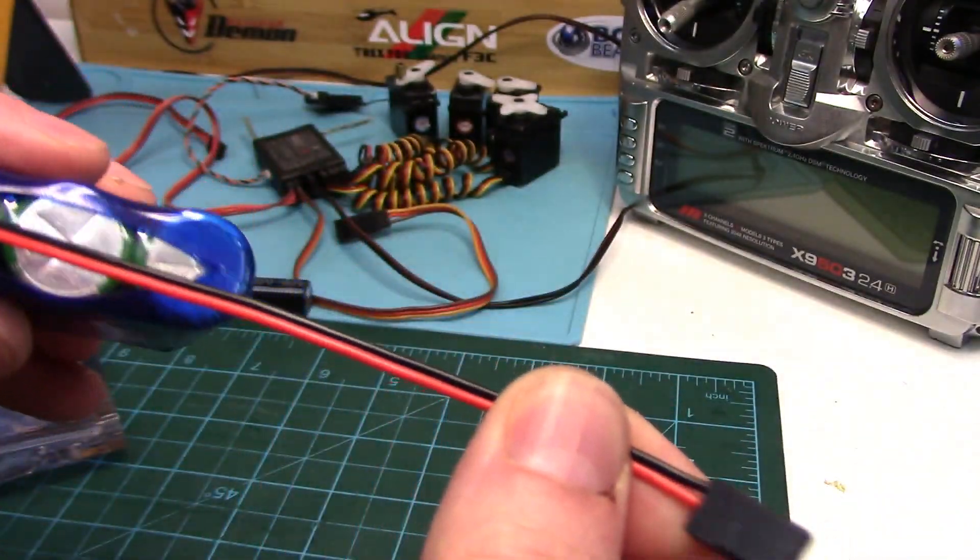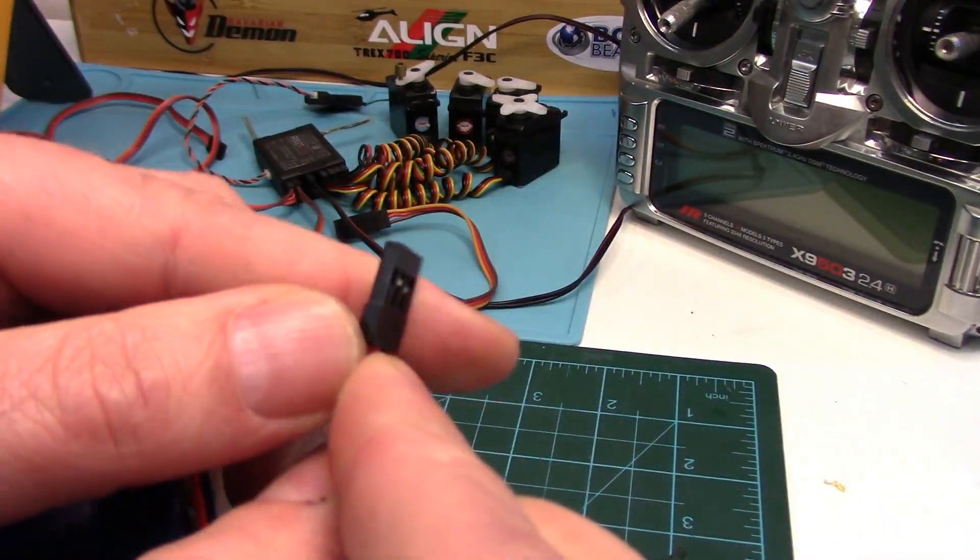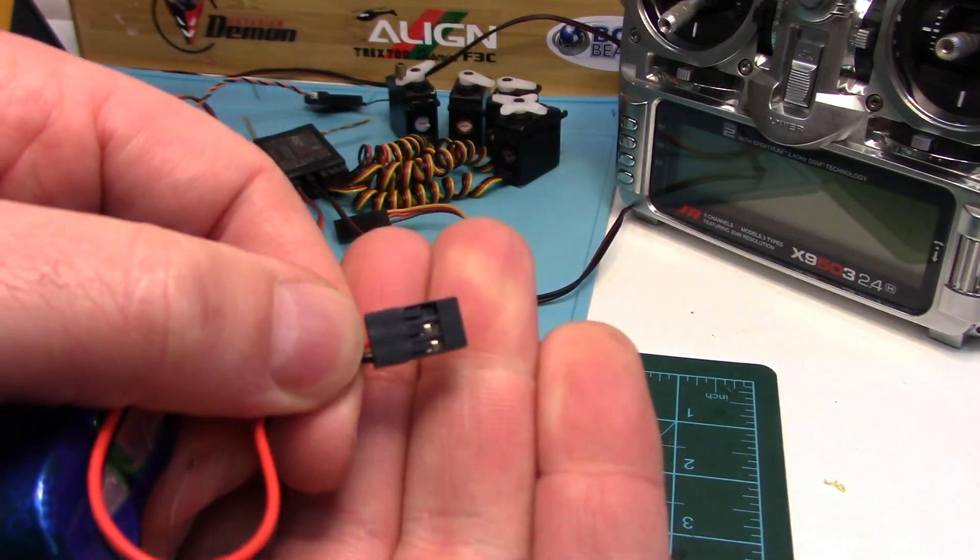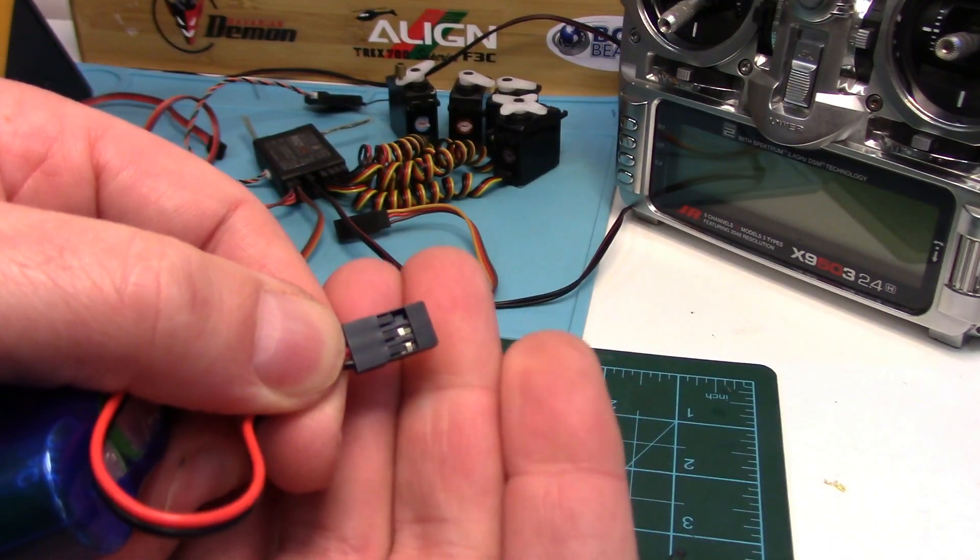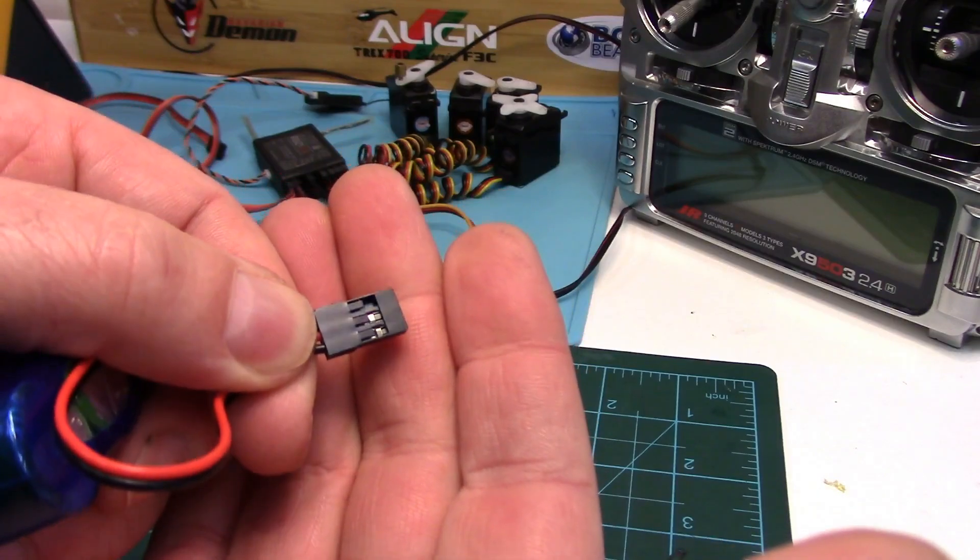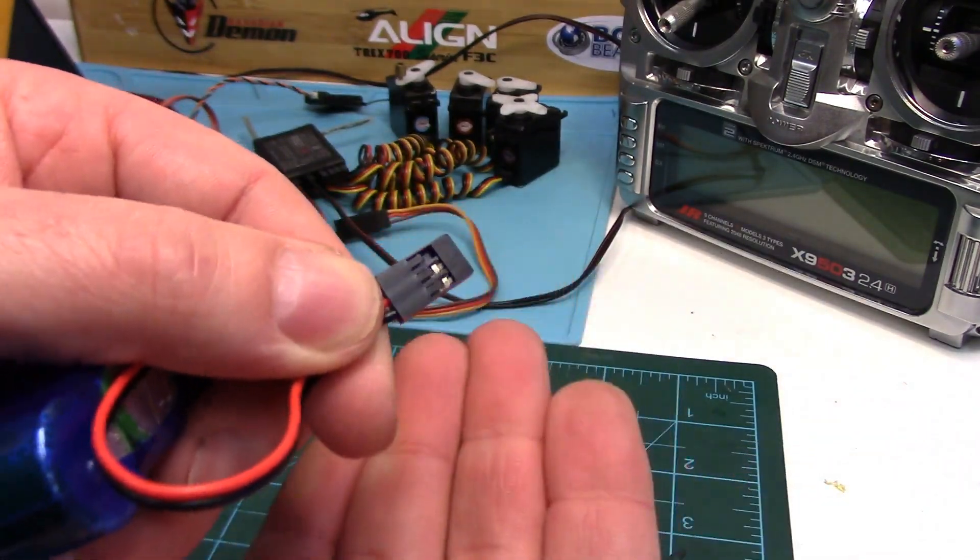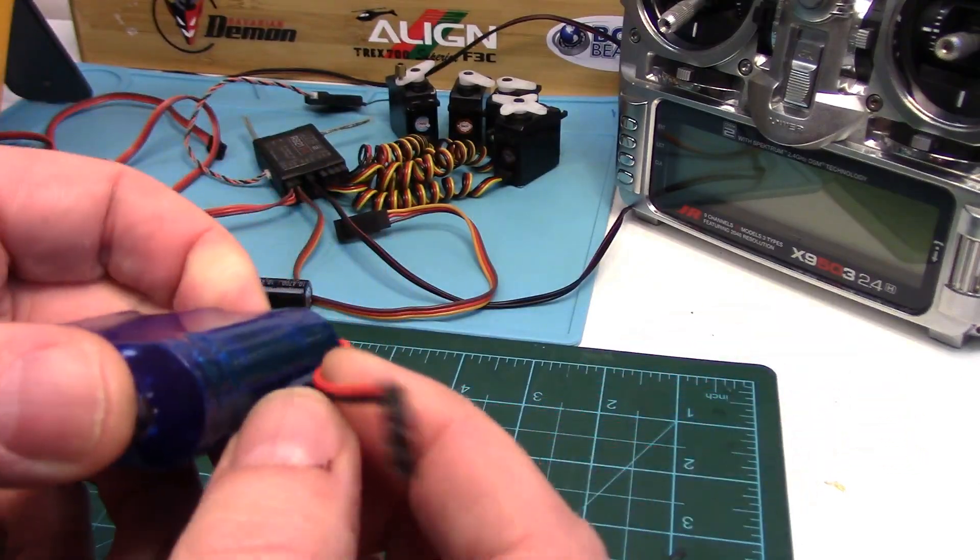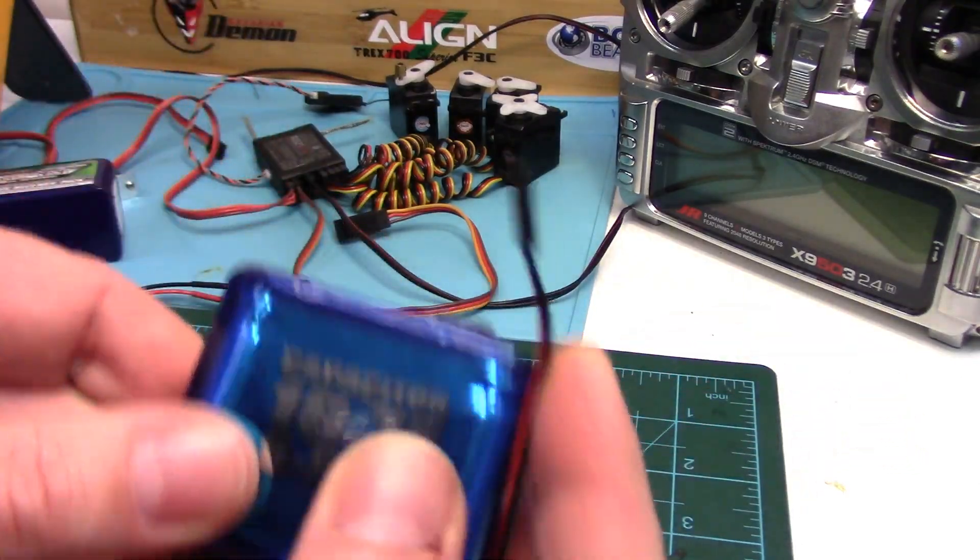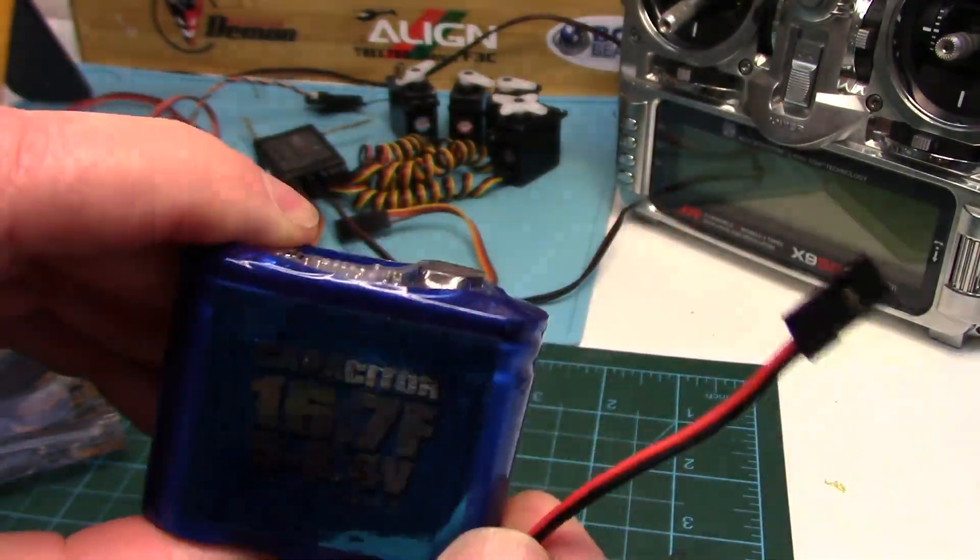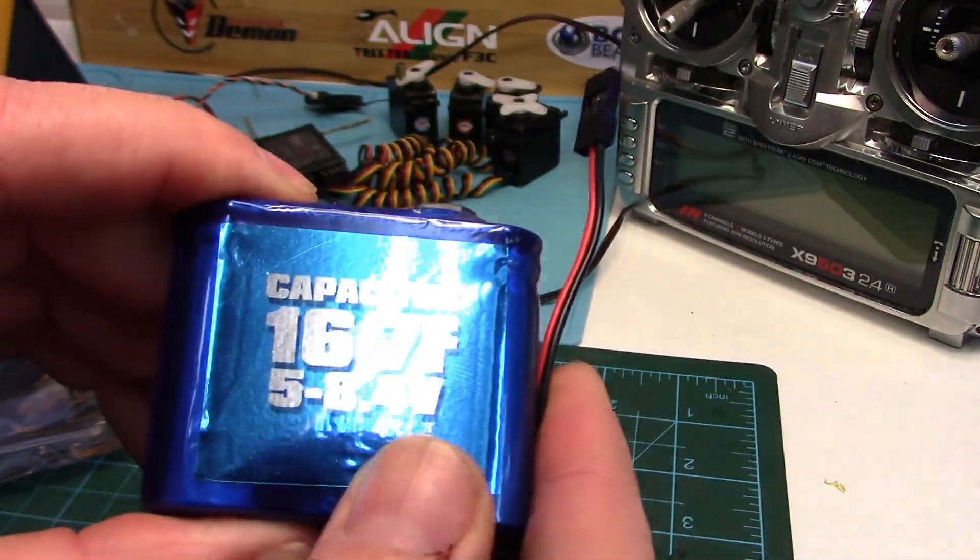It's got a two-conductor wire coming out of it with a standard servo plug on the end, and you would just plug this into any spare or unused channel on your receiver or flybarless flight controller unit, and you're just powering up the power bus. So if the main power into your system was to fail or your BEC failed, this would then be providing power for a short period of time, giving you time to glide in or autorotate.